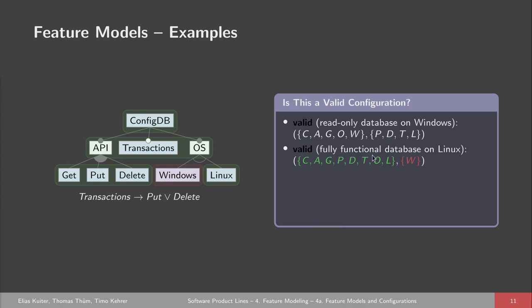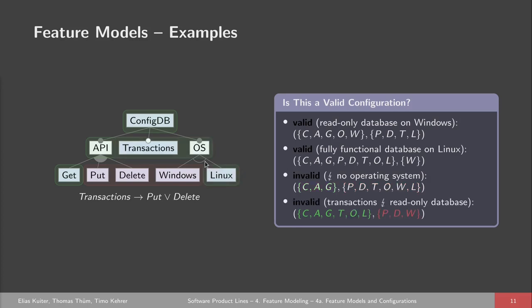Another example is the fully functional database on Linux, where the only feature not selected is Windows — everything else checks out. Windows is deselected, as it has to be; if it were also selected, the alternative group would be violated. More interestingly, the configuration with no operating system is invalid: Windows and Linux are both deselected, which violates the alternative group constraint. Similarly, the configuration where transactions is selected but neither put nor delete is selected violates the cross-tree constraint that transactions implies put or delete.